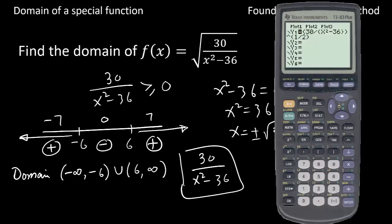Let us look at the main graph. So if you type your graph like 30 over x squared minus 36, exponent is 1 half, then the graph will look like this.